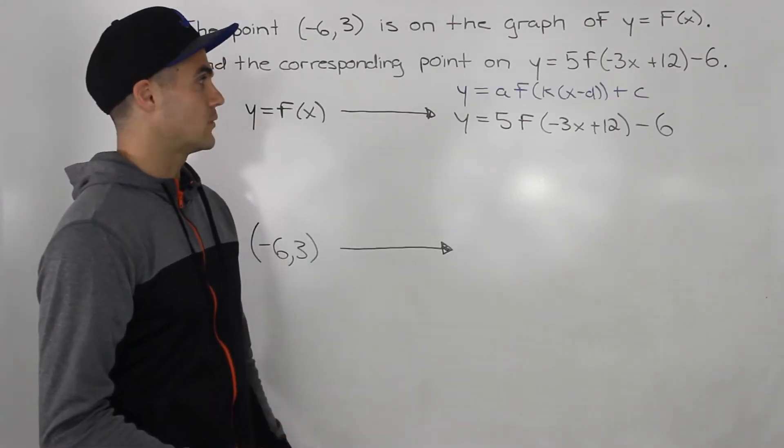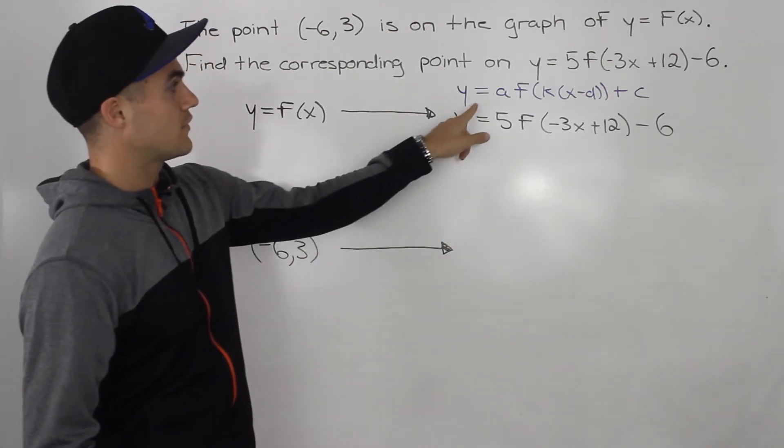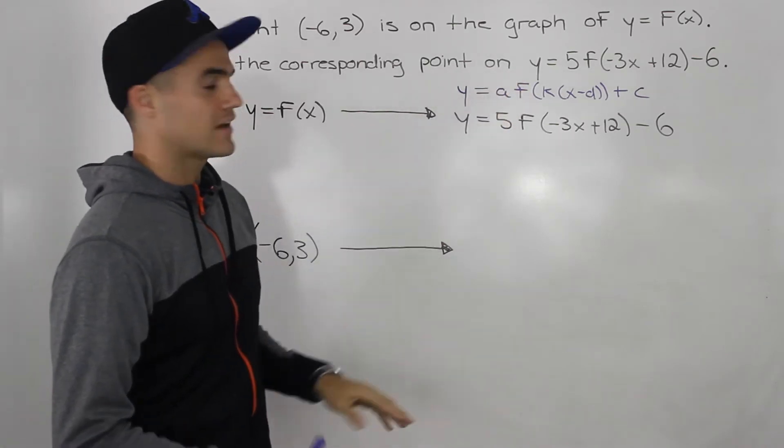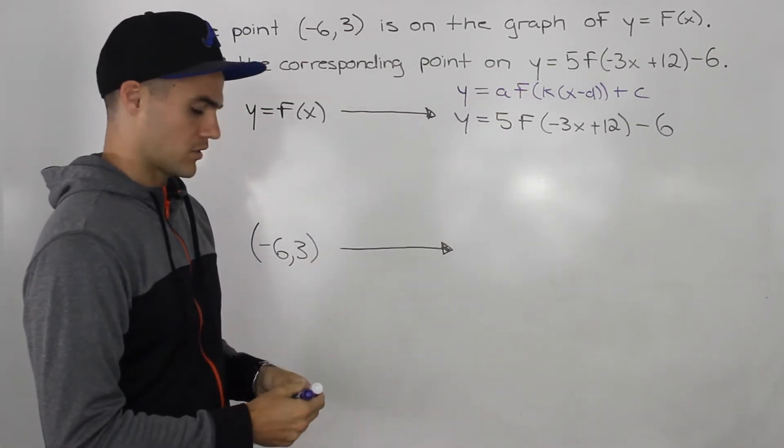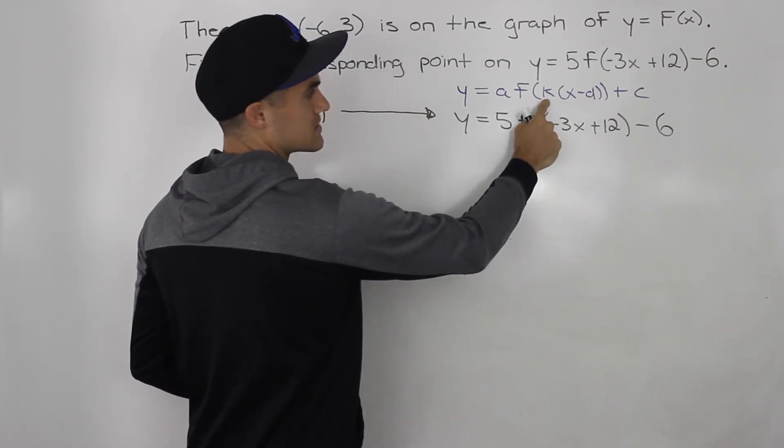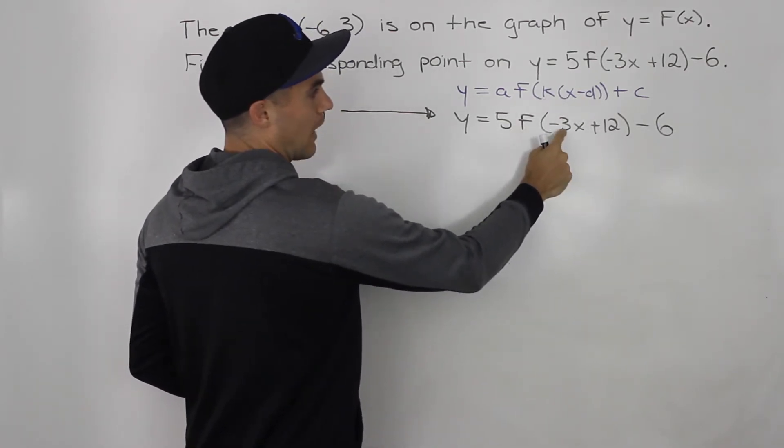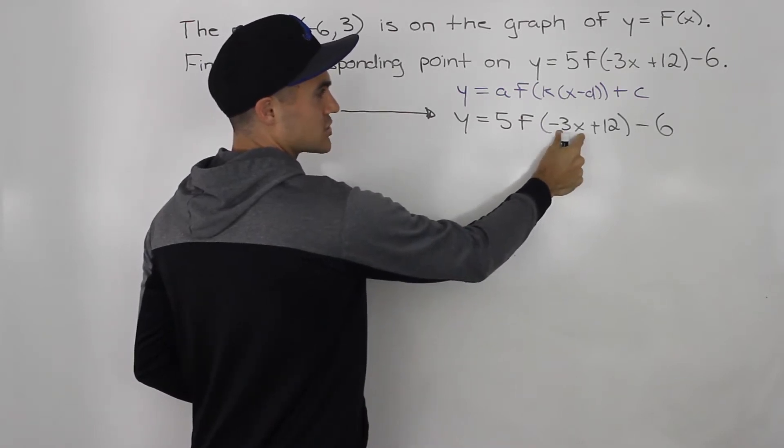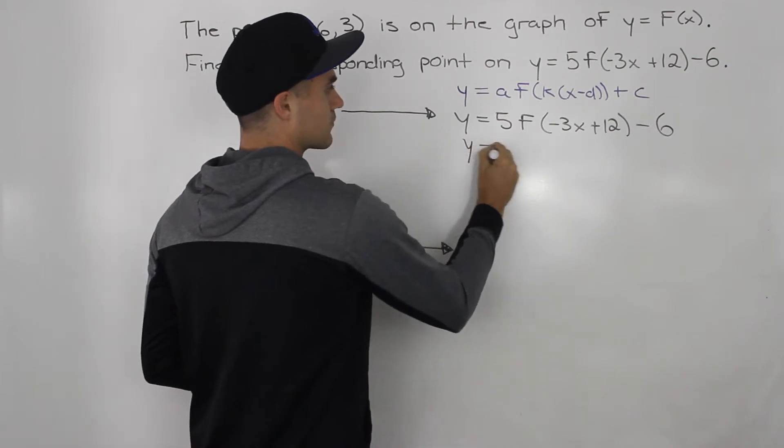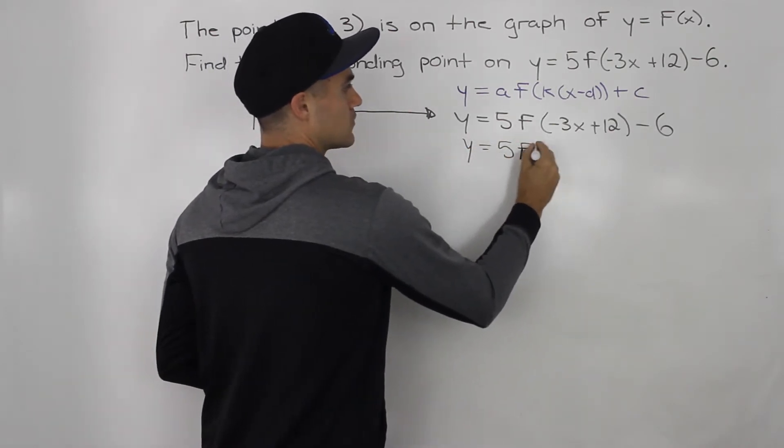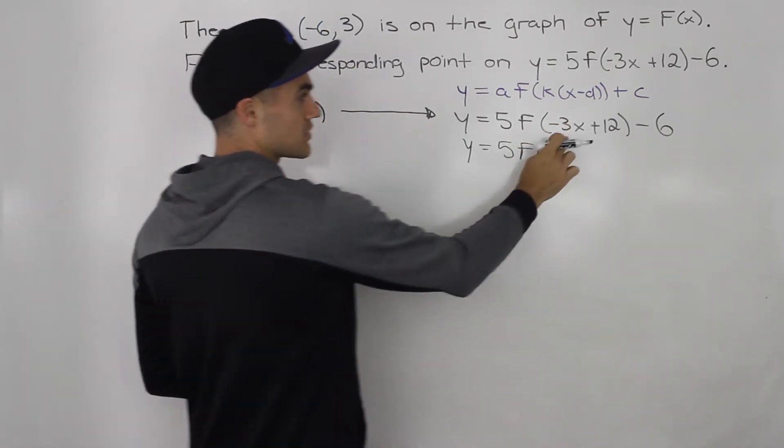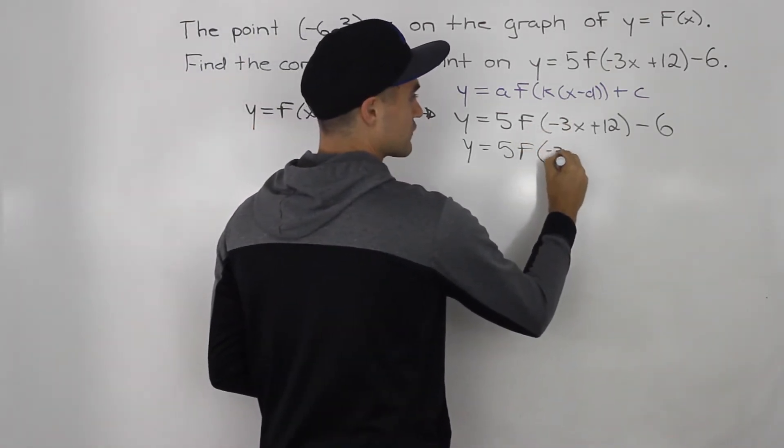Now in order to do that, we have to make sure that the transform function is in this form here. And if you look at what we're given, it's almost in that form, except for inside the bracket. Notice how this k here is by itself, while this k is attached to the x. So what we have to do is we need to inside the bracket factor out whatever's attached to the x. So the negative three is attached to the x, so we have to factor that out.